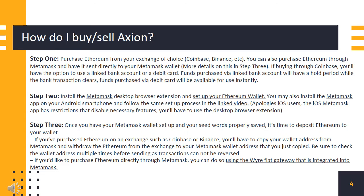Step 3: Once you have your Metamask wallet set up and your seed words properly saved, it's time to deposit Ethereum to your wallet. If you've purchased Ethereum on an exchange such as Coinbase or Binance, you'll have to copy your wallet address from Metamask and withdraw the Ethereum from the exchange to your Metamask wallet address. Be sure to check the wallet address multiple times before sending, as transactions cannot be reversed. If you'd like to purchase Ethereum directly through Metamask, you can do so using their integrated payment gateway.